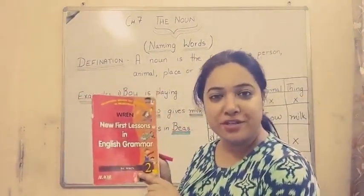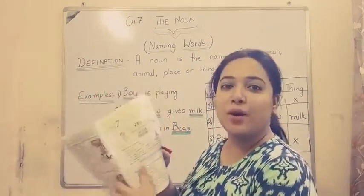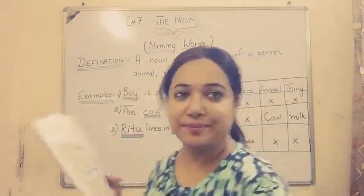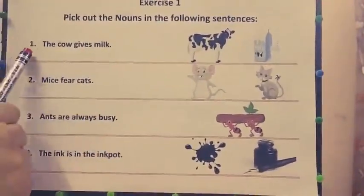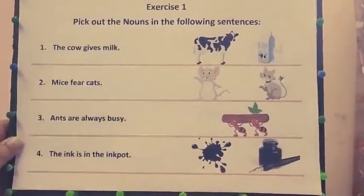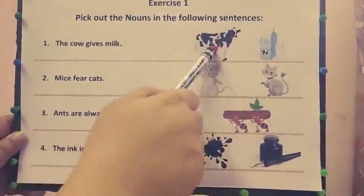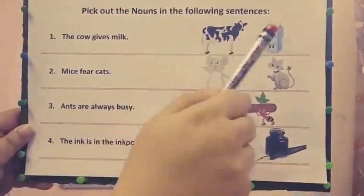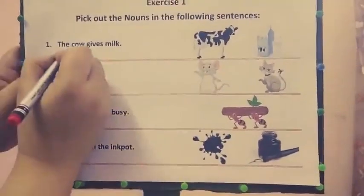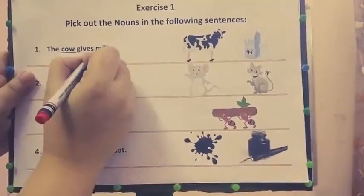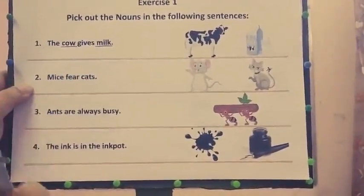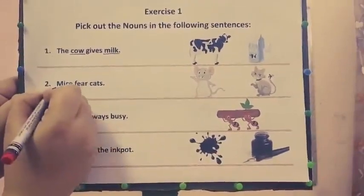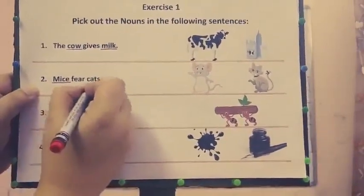Now, students, take out your English grammar book, page number 13, exercise number 1 and lesson number 7. We'll start with exercise number 1. Here, we have to pick out the nouns in the following sentences. The first one is: 'The cow gives milk.' Two nouns: cow and milk. In the second sentence, 'Mice fear cats' — two names of animals: mice and cats.